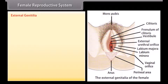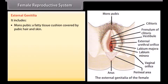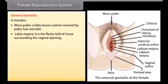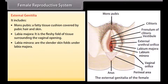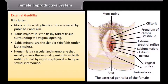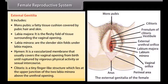The external genitalia includes the mons pubis, a fatty tissue cushion covered by pubic hair and skin; the labia majora, a fleshy fold of tissue surrounding the vaginal opening; the labia minora, slender skin folds beneath the labia majora; the hymen, a vascularized membrane that usually covers the vaginal opening until ruptured by vigorous physical activity or sexual intercourse; and the clitoris, a tiny finger-like structure at the upper junction of the two labia minora, above the urethral opening.